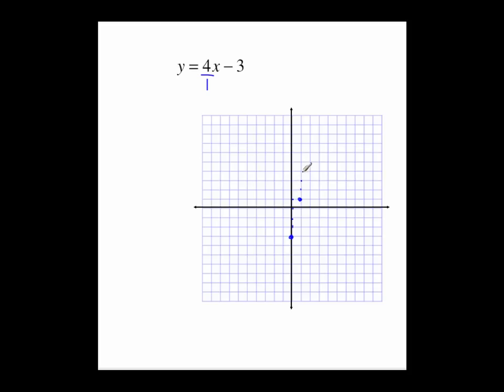Count it again. Up 1, 2, 3, 4 to the right 1. So now I can draw my line through those 3 points. I missed a little so we'll have to adjust the line. But you got the idea.